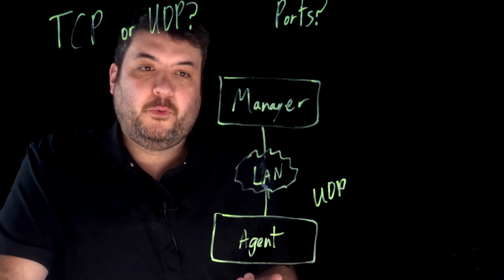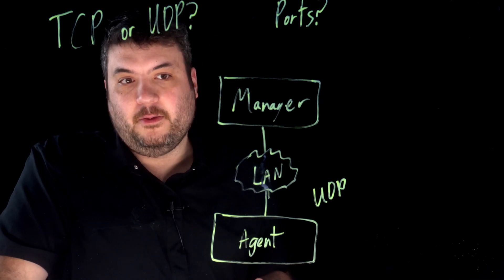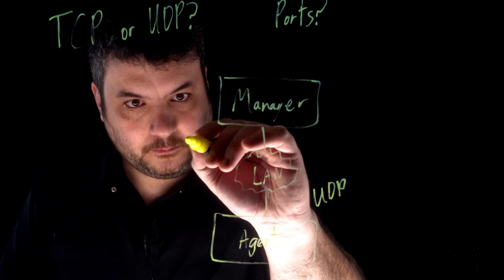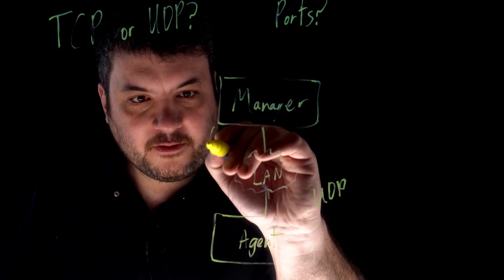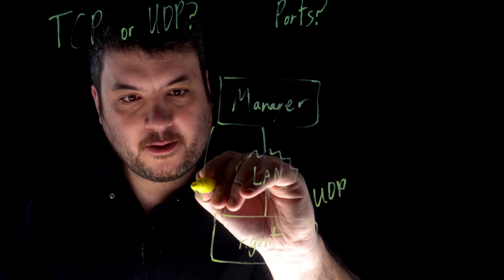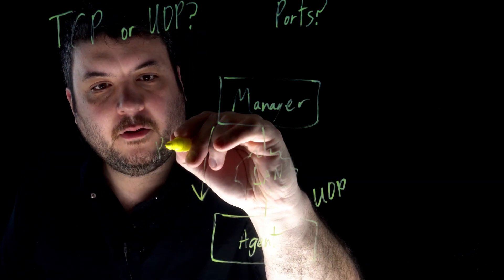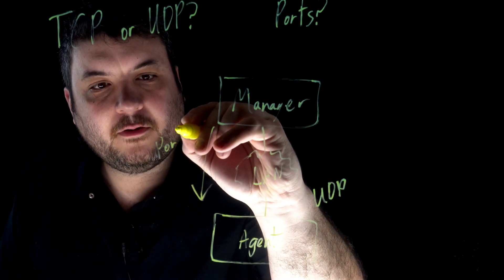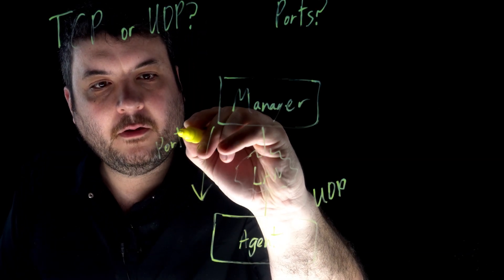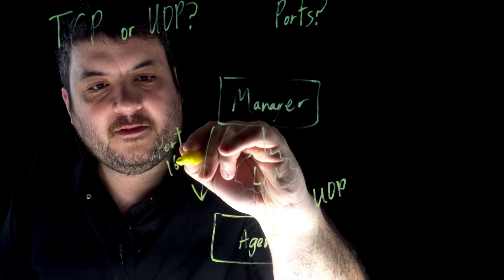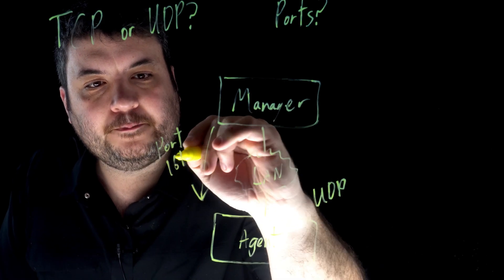But due to the port order, let's describe them in the opposite way. When the manager wants to send messages down to the agent, we are talking about port 161.